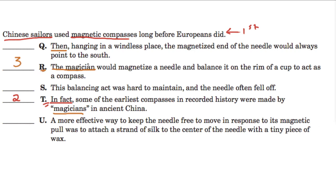So, so far, we know that we start with this sentence up here. Then we say, in fact, some of the earliest compasses in recorded history were made by magicians in ancient China. And then just read it, see if it makes sense. Well, yes, next, they say, the magician would magnetize a needle and balance it on the rim of the cup to act as a compass. So, it's talking about the balance, the way this needle would balance on the rim of a cup to act as a compass.